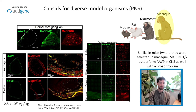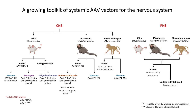Interestingly, in macaques, unlike mice, MAC PNS1 and MAC PNS2 also cross the blood-brain barrier to infect the brain with enhanced potency and a broad cell-type tropism. That takes us back to our systemic AAV toolkit: PHPEB for broad tropism in the CNS; a panel of AAVs for biased or specific tropism within cell types of the central nervous system; in marmosets and rhesus macaque, new capsids with either neuron-specific or broad tropism; and in the peripheral nervous system, MAC PNS1 and MAC PNS2, where MAC PNS2 has broad tropism across the sensory and enteric nervous system and MAC PNS1 is more targeted to the nodose and dorsal root ganglia.